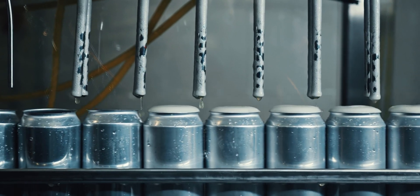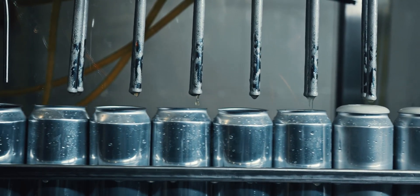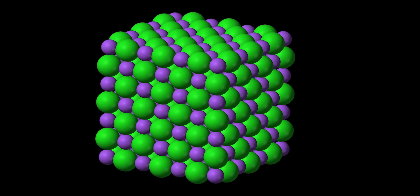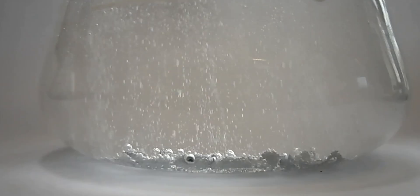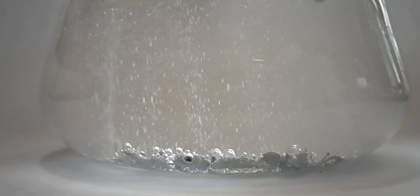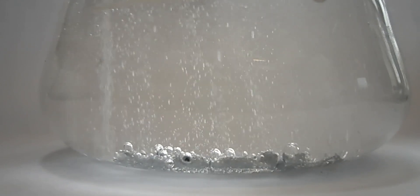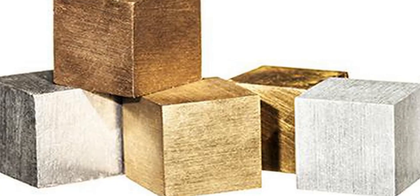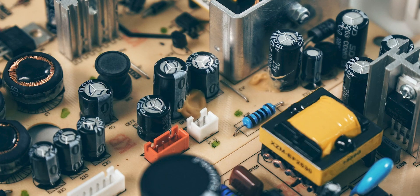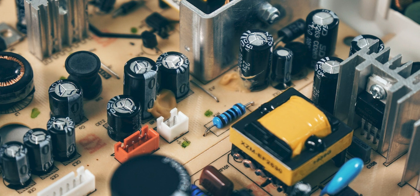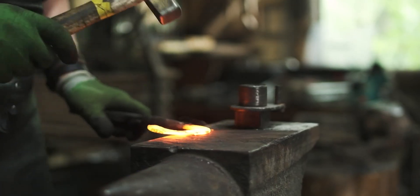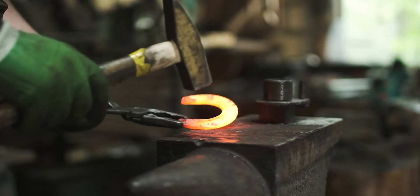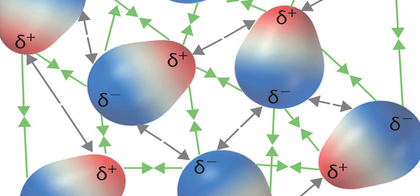Solids are a type of condensed matter where the constituent particles, such as atoms or molecules, are closely packed together in a fixed pattern or arrangement. Unlike liquids, which are also a type of condensed matter, solids have a fixed shape and volume and are relatively resistant to deformation. There are many types of solids, including metals, ceramics, polymers, and semiconductors, each with its own unique properties and applications. In general, solids can be classified into two categories based on the type of bonding between the constituent particles: covalent solids and non-covalent solids.